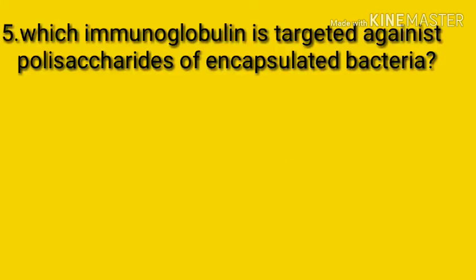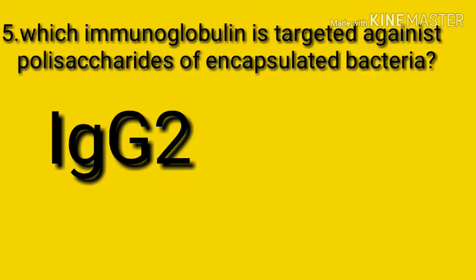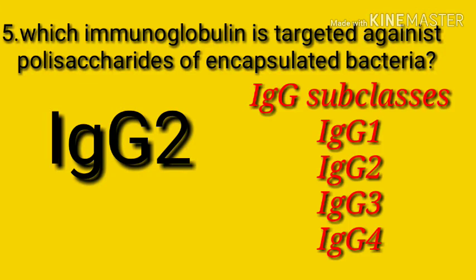Question number five: which immunoglobulin is targeted against polysaccharides of encapsulated bacteria? IgG2. IgG type antibodies are composed of four different subtypes called IgG subclasses: IgG1, IgG2, IgG3, and IgG4. When one or more subclasses is persistently low and total immunoglobulin is normal, a subclass deficiency is present. IgG2 subclass deficiency is associated with a diminished immune response to polysaccharide antigens.